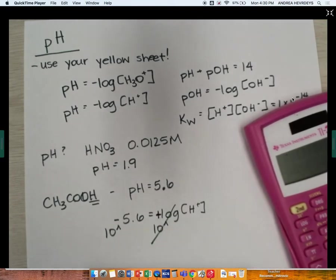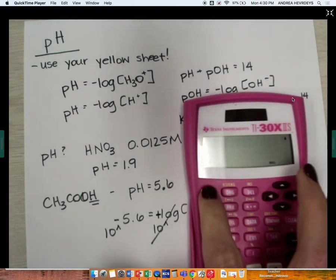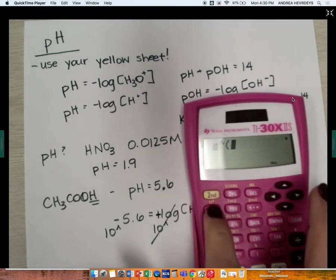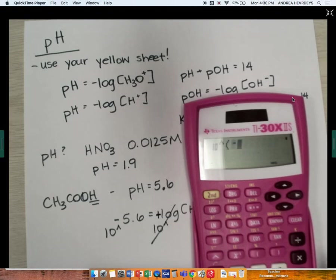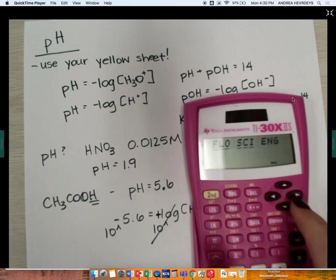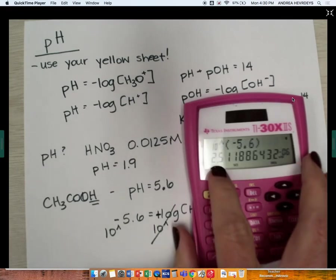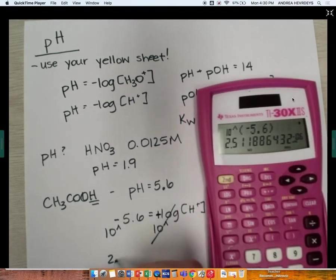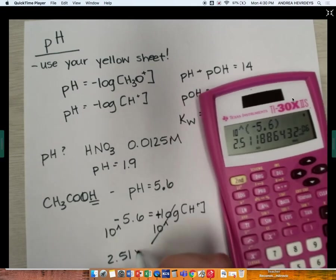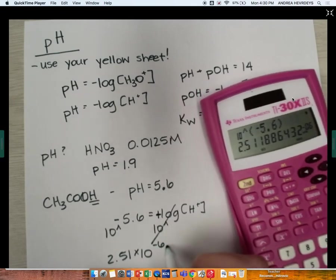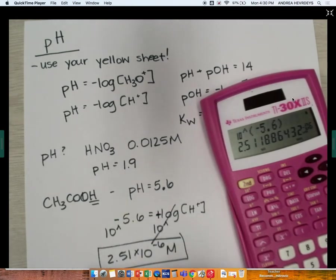But now to get rid of a log, I have to take 10 to the power of that. That's what gets rid of that log. And so I'm going to type in second log, which is 10 to the power of negative 5.6. And that gives me a really tiny concentration, but when I'm going to put it in scientific notation, it is going to be 2.51 times 10 to the negative 6 molar. That is the concentration of my acetic acid solution.